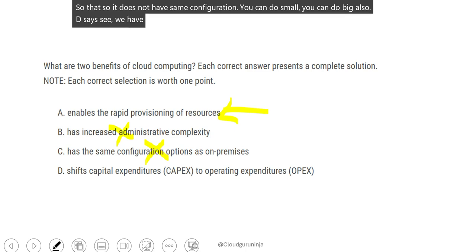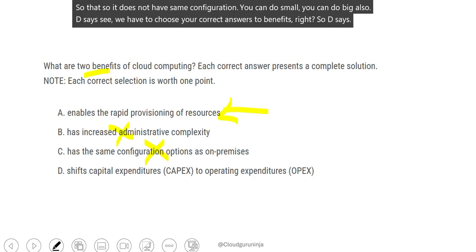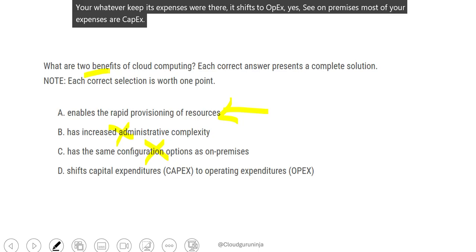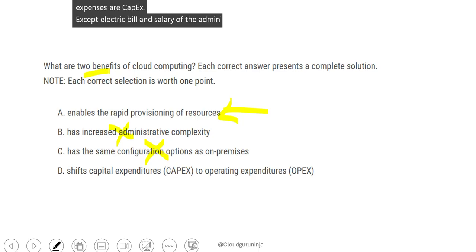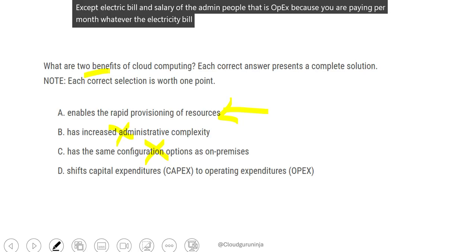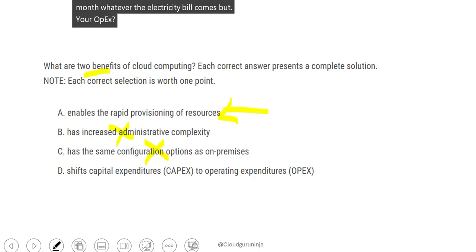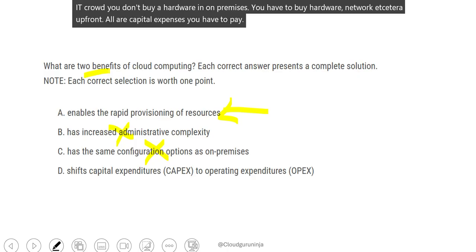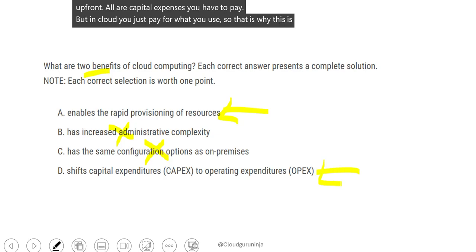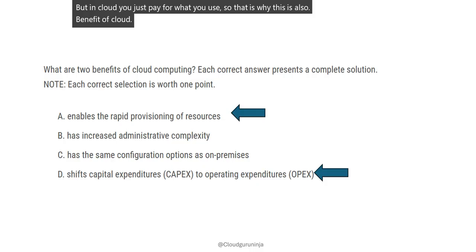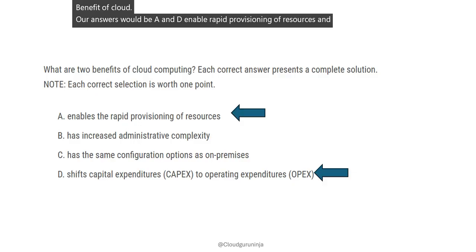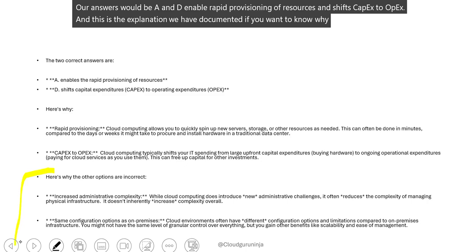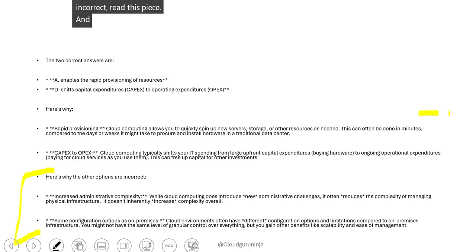Option D says CAPEX expenses shift to OPEX. On premises, most expenses are CAPEX — you buy hardware, network equipment, all upfront capital expenses. The only OPEX on premises is the electricity bill and admin salaries. But in the cloud, you just pay for what you use, so it shifts to OPEX. The correct answers are A and D: rapid provisioning of resources and shifting CAPEX to OPEX. The explanation for why other options are incorrect is also documented.